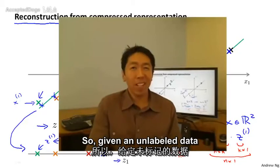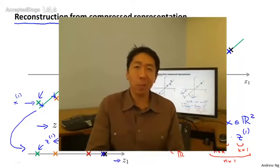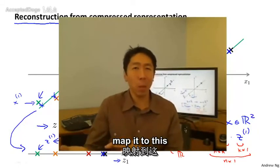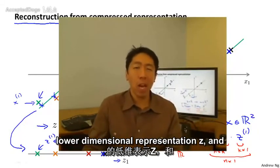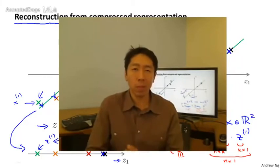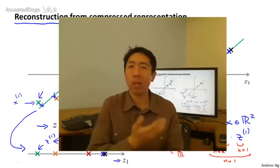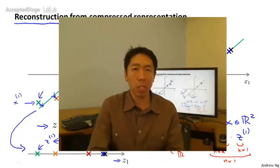Given an unlabeled dataset, you now know how to apply PCA and take your high-dimensional features x and map it to this lower-dimensional representation z. From this video, hopefully you now also know how to take this lower representation z and map it back up to an approximation of your original high-dimensional data.